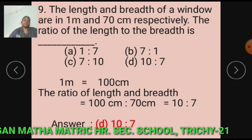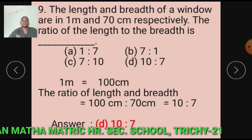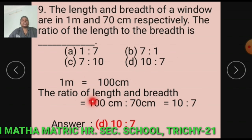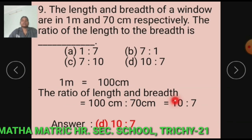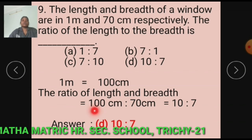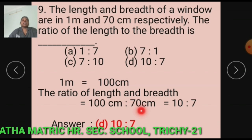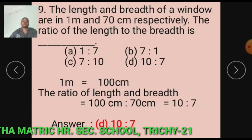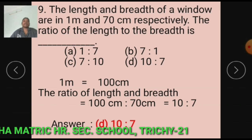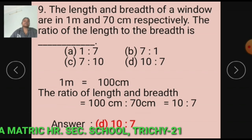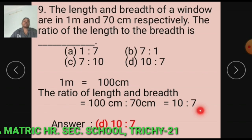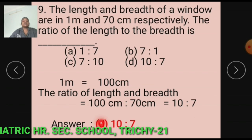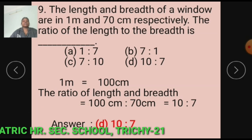1 meter equals 100 cm. The ratio of length to breadth equals 100 is to 70. 100 and 70 are simplified by 10, so we get 10 is to 7. The answer is Option D: 10 is to 7.